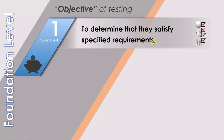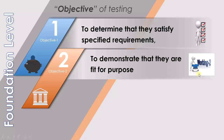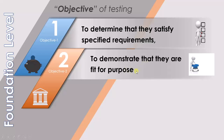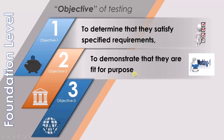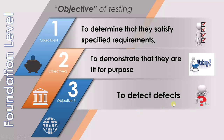The second objective is to demonstrate that they are fit for the purpose. This means that the product you have developed needs to work correctly every single time you use it — the first time, the second time, the third time. You have to demonstrate that the product is working as intended for the customer. The final objective is to detect defects. This is the main purpose of testing. We try to find defects and make sure that the risk of using the software is minimal.